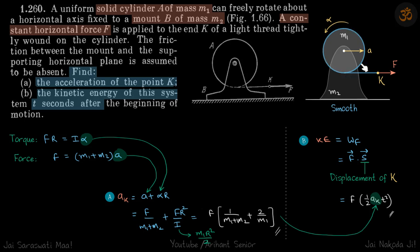So again, acceleration of point K on the rope will be acceleration of the center a plus α·r. We'll put the values of a and α here and we'll get our answer.